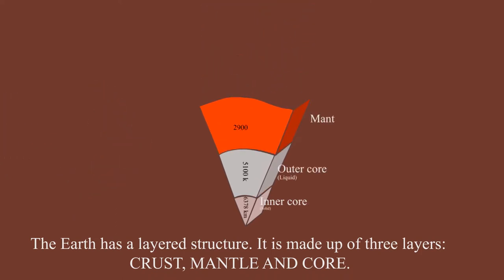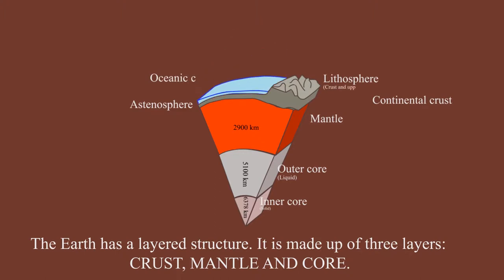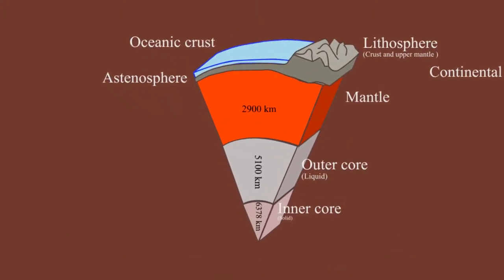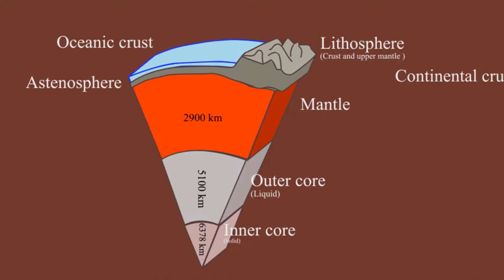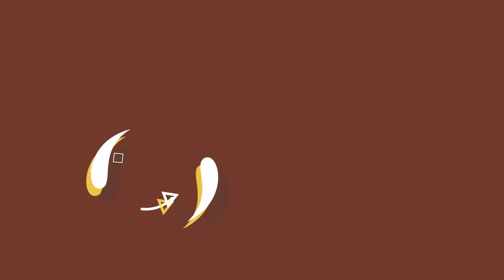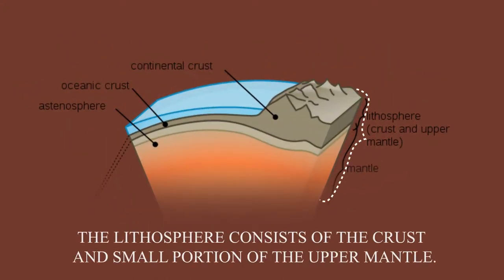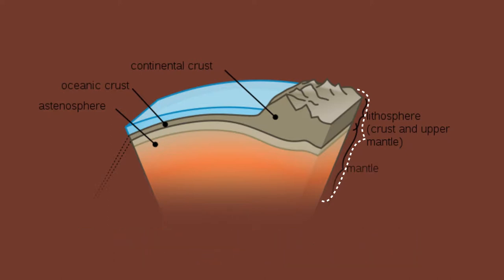The earth has a layered structure. It is made up of three layers: crust, mantle and core. The outermost part of the earth is called the lithosphere. The lithosphere consists of the crust and a small portion of the upper mantle.